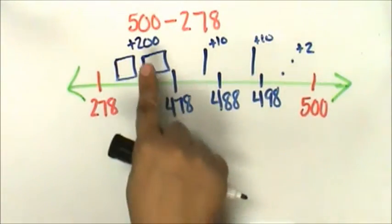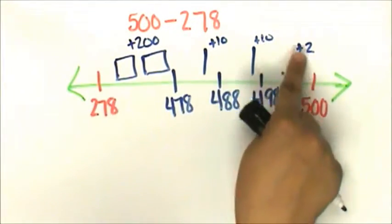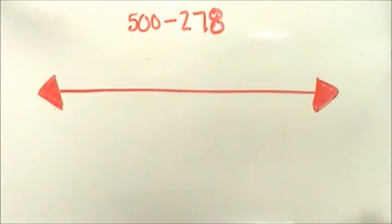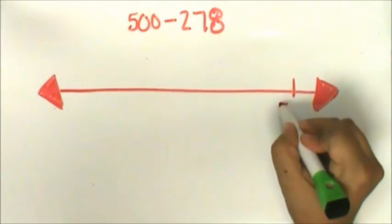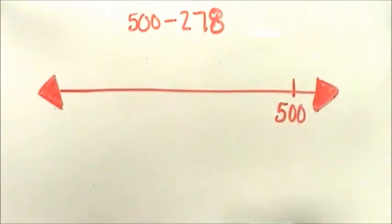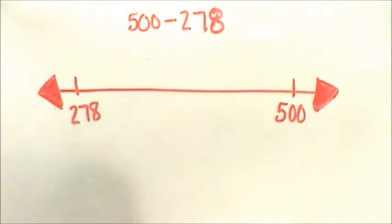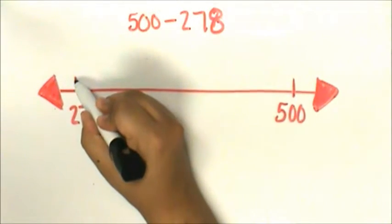Jessica has 222 buttons left. Let's try the problem with an abstract representation. Jessica had 500. She gave Kelly 278. 222, 278.